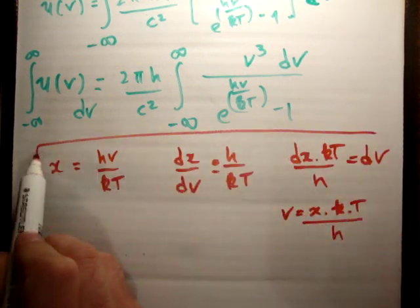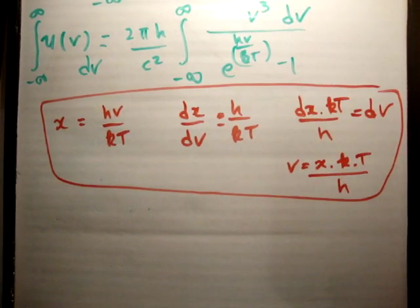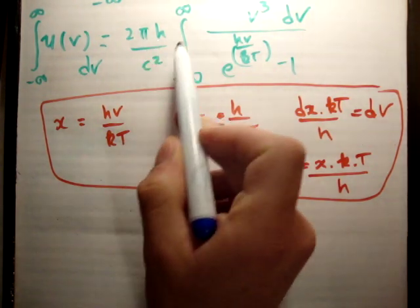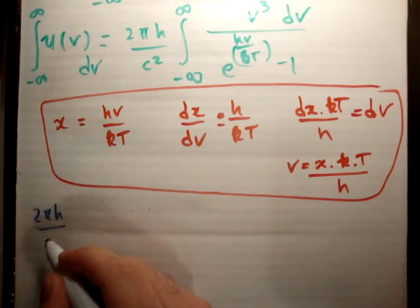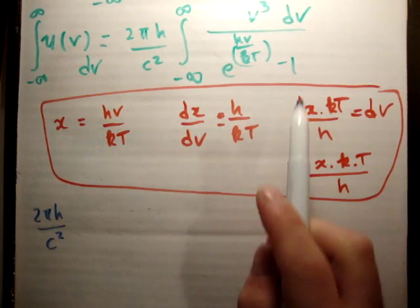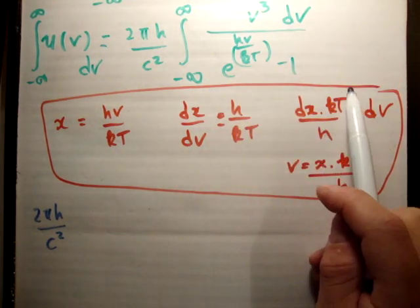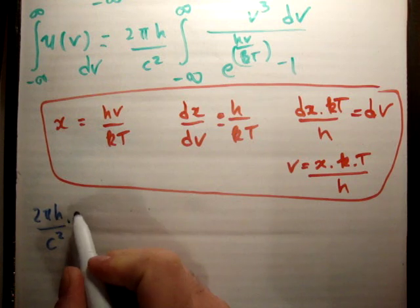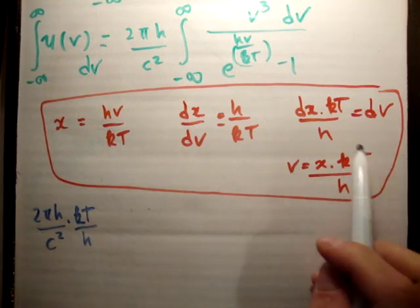That is the work done to change the variables of this integral. Let's apply that and see what we get. Initially we'll have the same factor of 2π times Planck's constant over c squared on the outside. Next we have d nu with the constant kT over h.